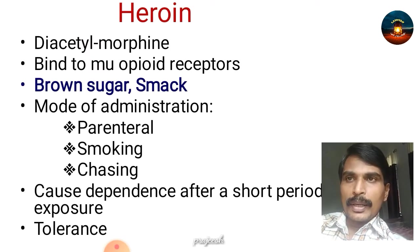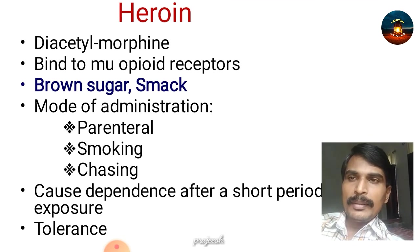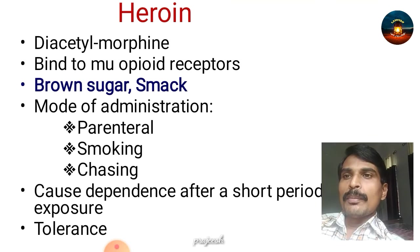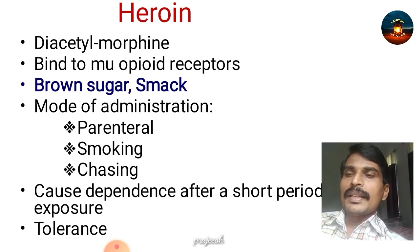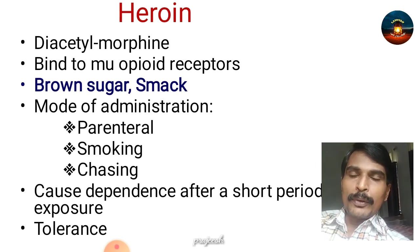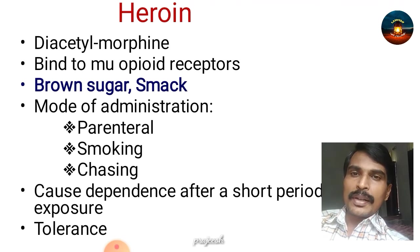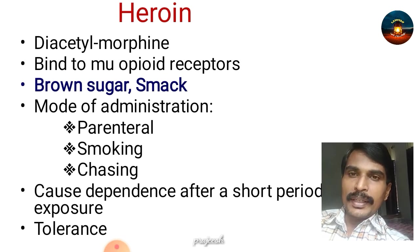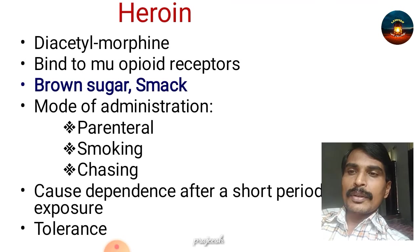Now we will discuss in detail about heroin. Heroin is also called diacetylmorphine. It binds to mu opioid receptors of the brain. It is also called brown sugar or smack. It can be administered parenterally, or by smoking or chasing — formed into fumes and sniffed. It causes dependence after a short period of exposure; even with one to two, or less than five times of intake, the person becomes highly dependent. Some people are even dependent with a single dose.